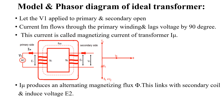Remember that the induced voltage — here E1 and E2 — will always be 180 degrees out of phase with the applied voltage.